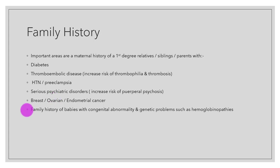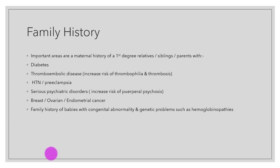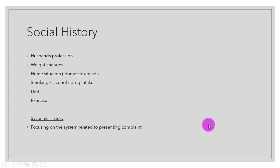In the family history, the important areas are maternal history of first-degree relatives — the siblings and parents of the mother. For this group we ask about diabetes, thromboembolic disease, hypertension or preeclampsia, serious psychiatric disorders — which increase the risk of puerperal psychosis — and breast, ovarian, or endometrial cancer. We also ask about a family history of babies with congenital abnormalities and genetic problems such as haemoglobinopathies.